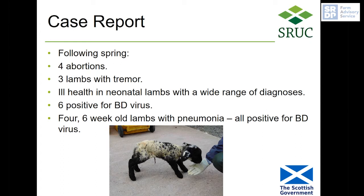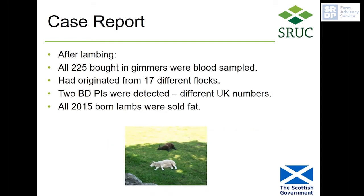There were no problems identified at scanning time, but the following spring at lambing there were a number of abortions, three lambs born that were trembly, and all sorts of ill health problems in young lambs — quite unusual for the flock — with significant deaths. Six ill lambs were tested for border disease virus and all were positive. Later, there were ongoing pneumonia issues in lambs around six weeks of age, and four of those tested were also positive for border disease virus. What had happened was sheep that had never met border disease before were infected in the first few months of pregnancy, resulting in the birth of persistently infected lambs. The virus can also affect the lamb's immune system so it doesn't respond properly to other infections. After lambing, all the bought-in gimmers were blood sampled as the most likely source, and when UK flock numbers were checked, they had originated from 17 different flocks.